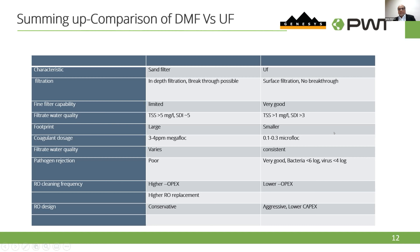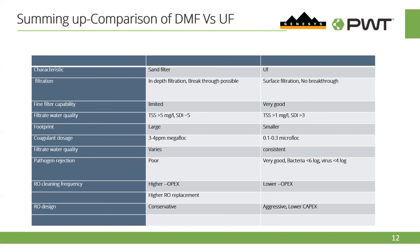Filtered water quality: TSS in UF can be less than 1 ppm and SDI less than 3. Footprint is large for sand filters whereas UF is smaller. Coagulant dose for sand filter requires 3 to 4 ppm, whereas UF requires only 0.1 to 0.2 ppm. As a result, RO cleaning frequency will be higher with sand filtration and lower with UF.